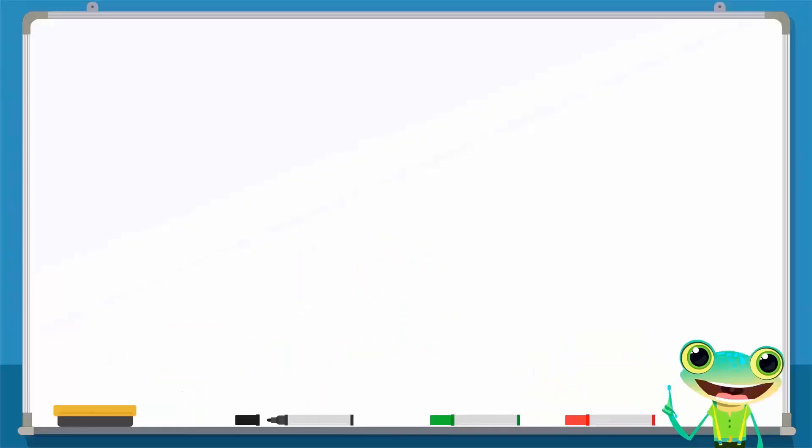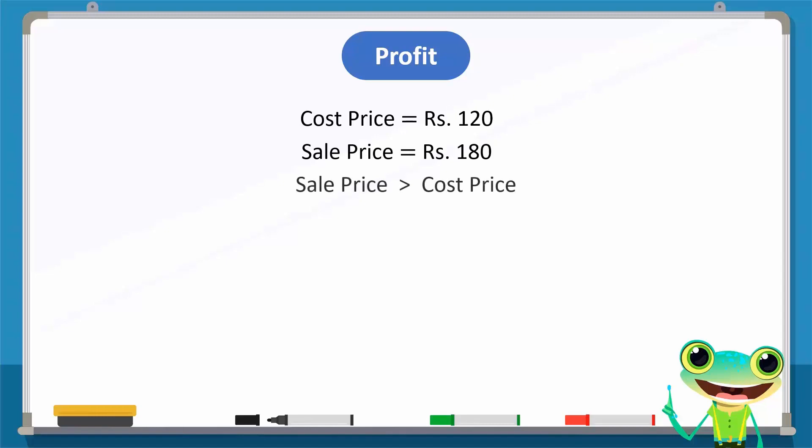Let's calculate if he earns a profit. Ali's pen's cost price is 120 rupees, while the sale price is 180 rupees. Since the sale price is larger than the cost price, we know that he would earn a profit.